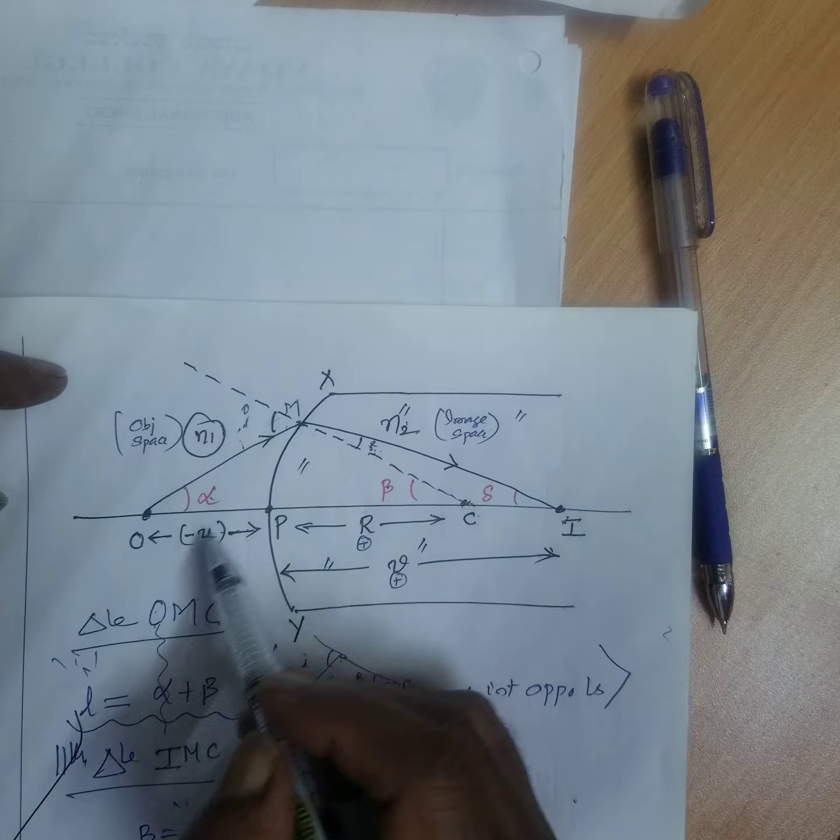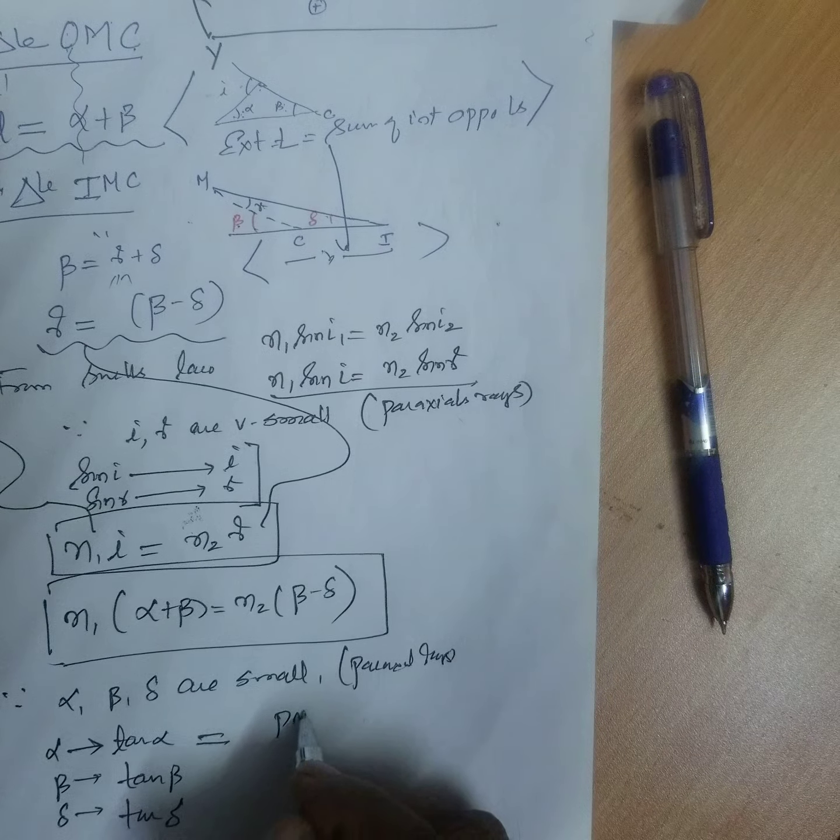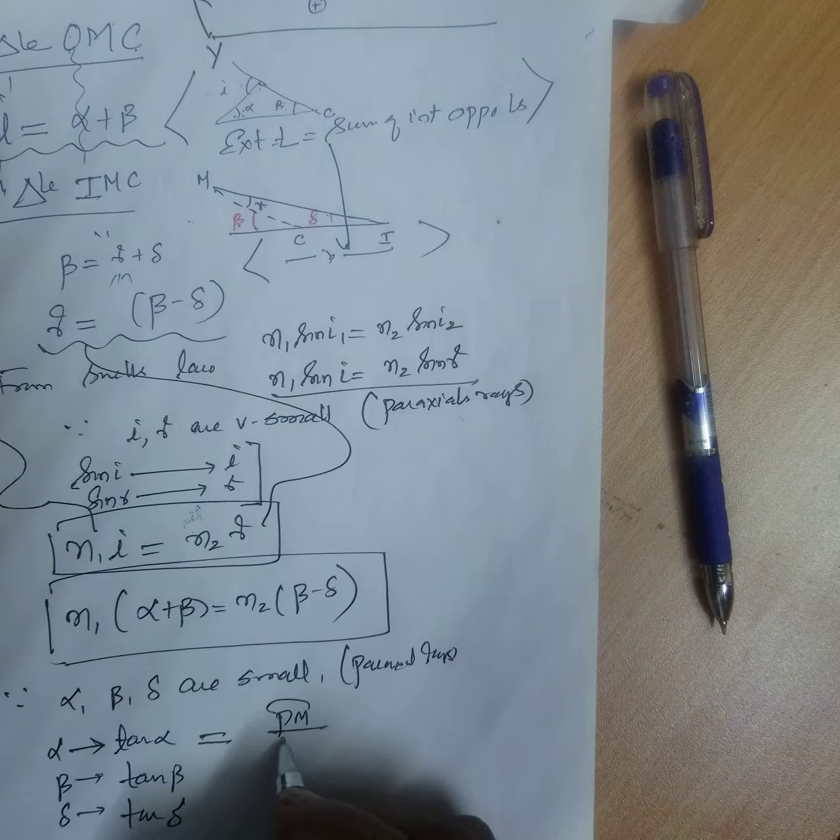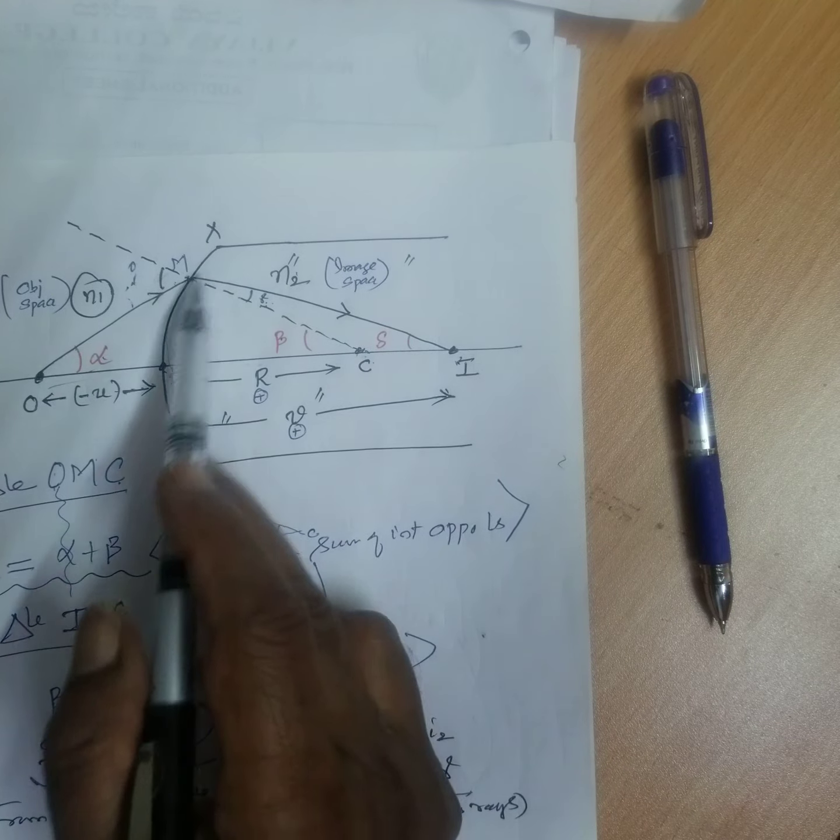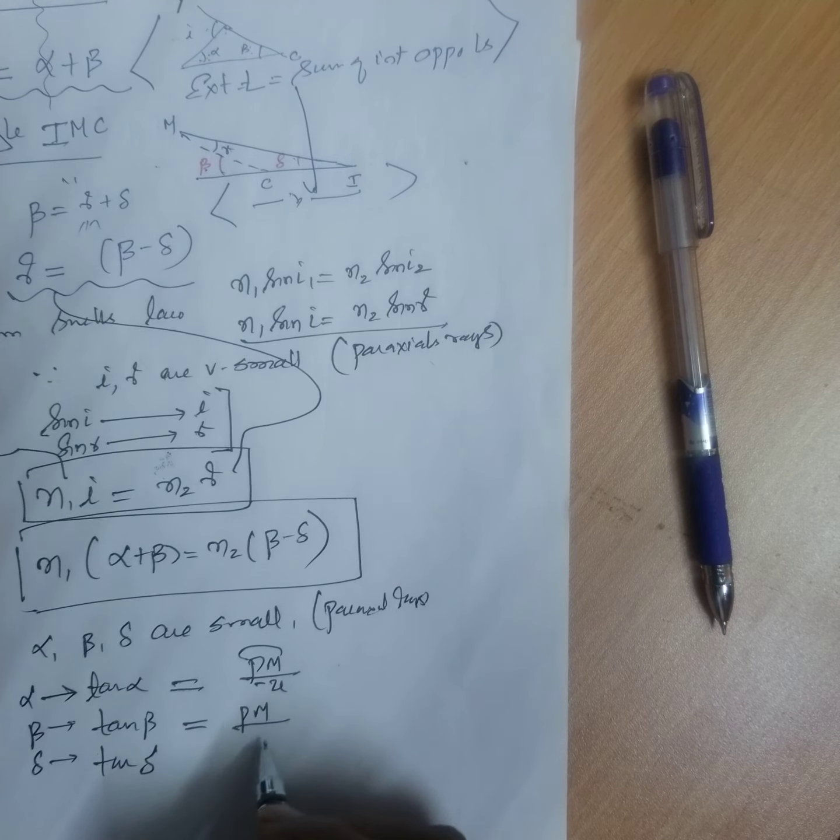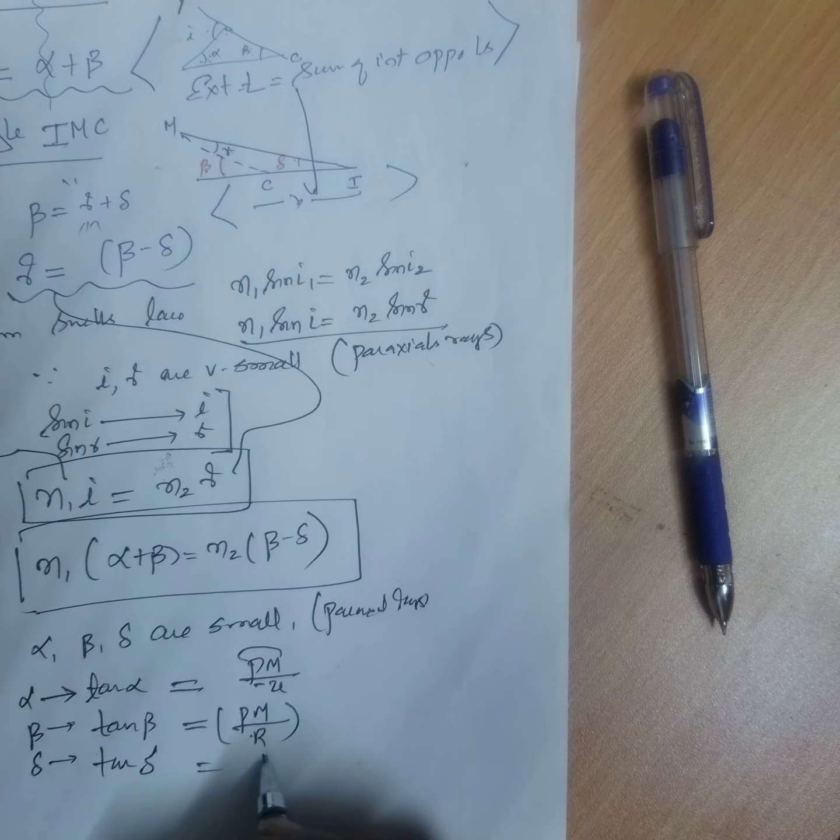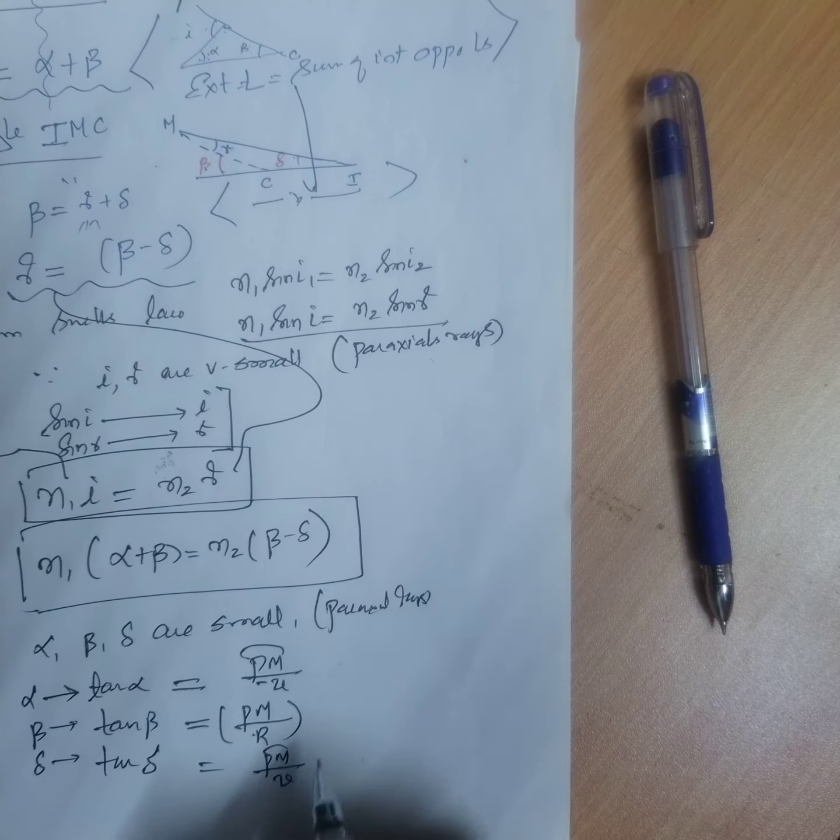Tan alpha is what? Alpha is equal to opposite by adjacent. That is PM by adjacent. Then, tan beta is what? Opposite by adjacent. What is opposite by adjacent? PM by R. Similarly, you will get PM by V.